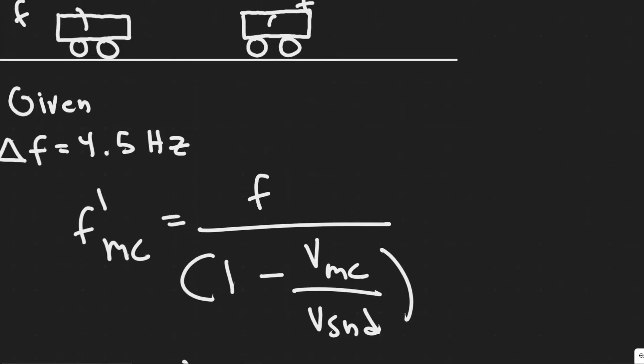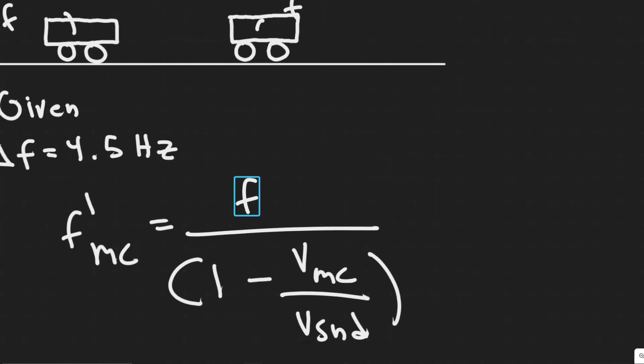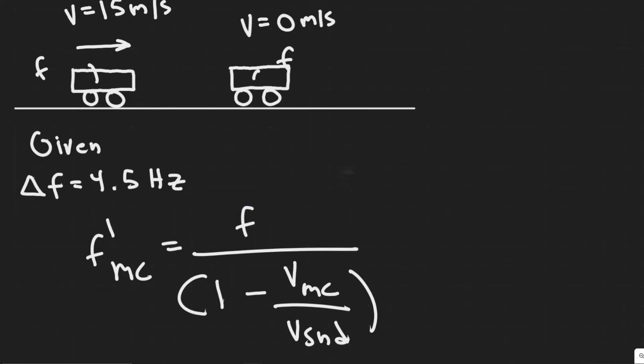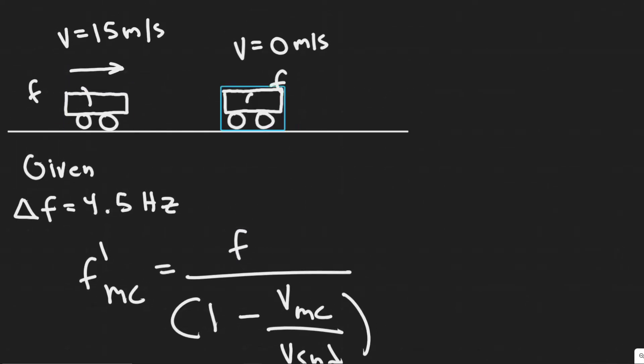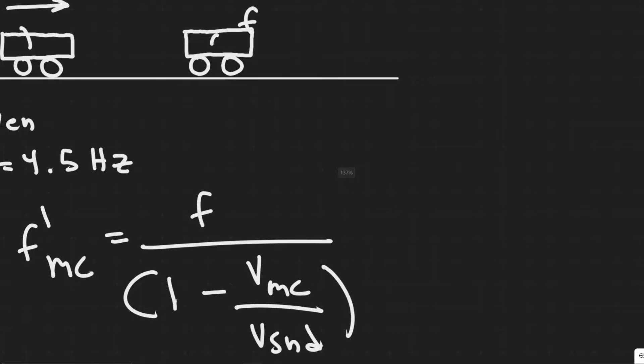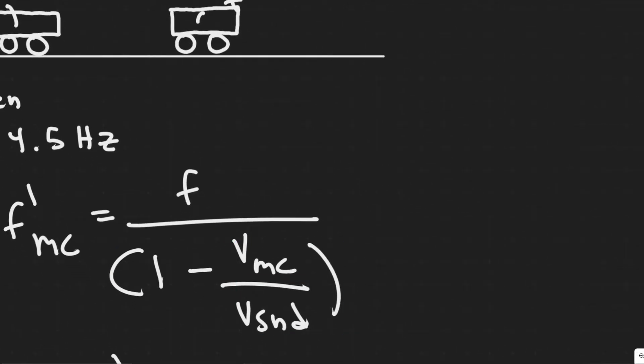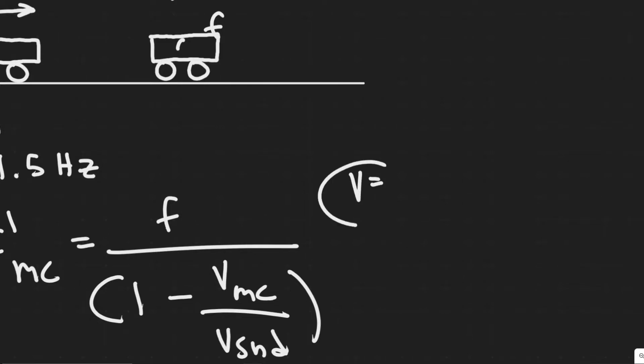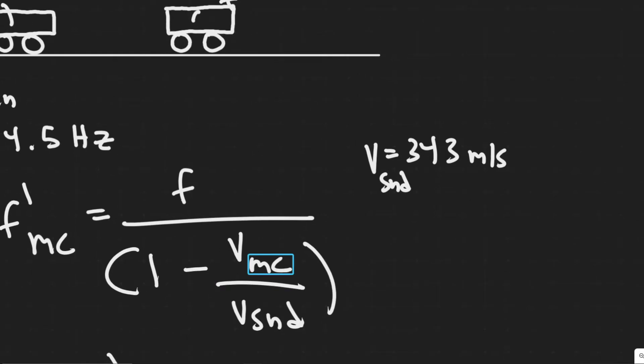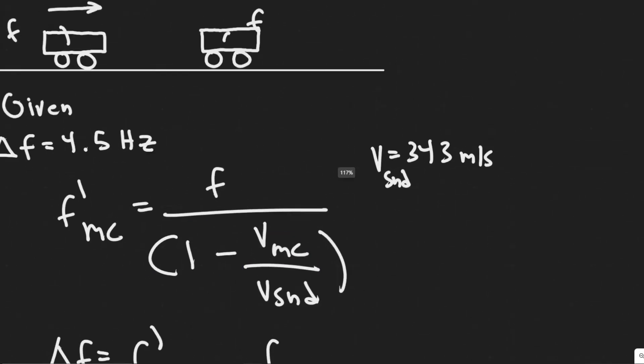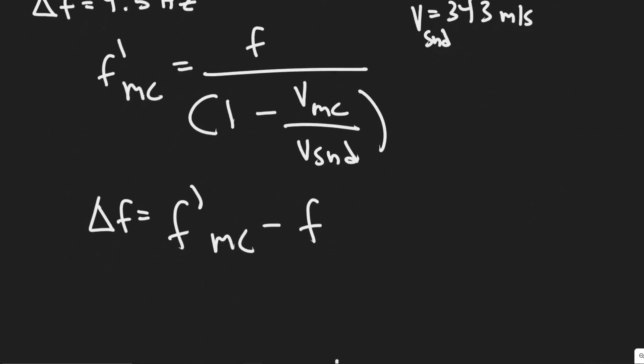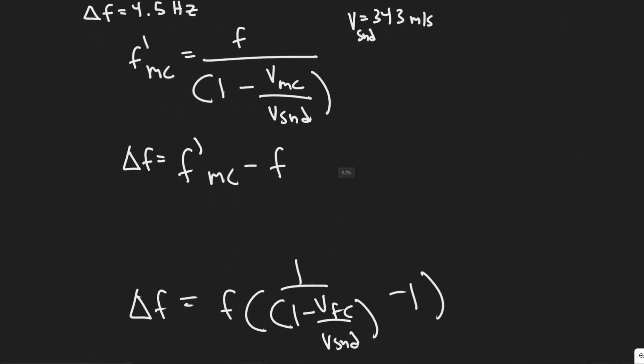The frequency interpreted from the moving car is equal to the frequency of the moving car, F. So keep in mind, they're both F. So it's F divided by 1 minus the velocity of the moving car divided by the velocity of sound. So we know the speed of sound at 20 degrees Celsius is 343 meters per second.